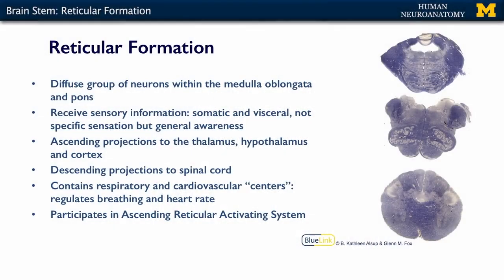The reticular formation sends that information up through the brainstem into the diencephalon, which is continuous with the brainstem, and then on up into the cortex. So it goes through your thalamus, which is a sensory gateway, and through the hypothalamus, which has a lot of regulatory functions, and then on up to your cortex. There are also descending projections of the reticular formation down your spinal cord, and these interact with the lateral and ventral corticospinal tracts and other neurons impacting the ventral horns to affect your muscles.